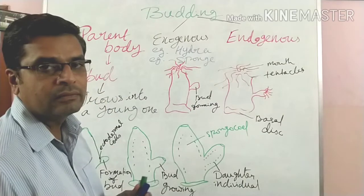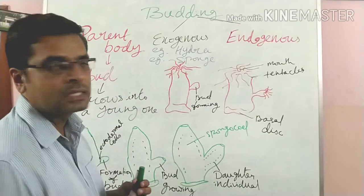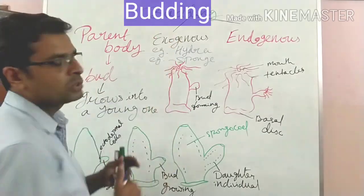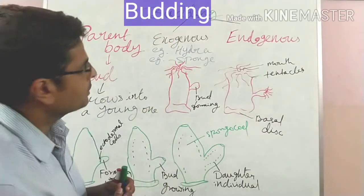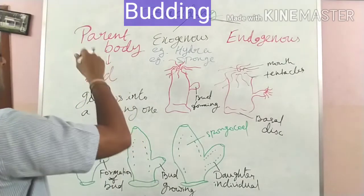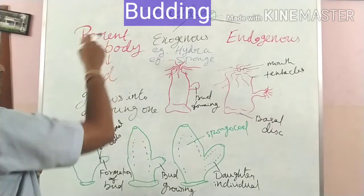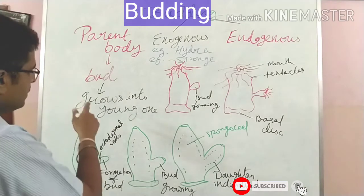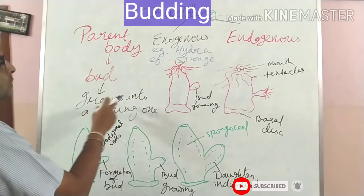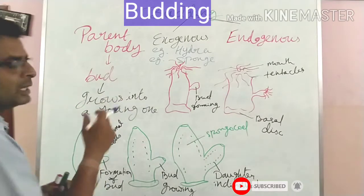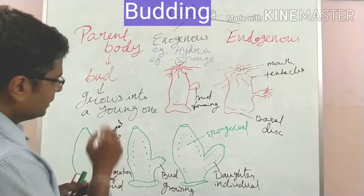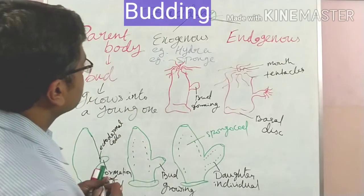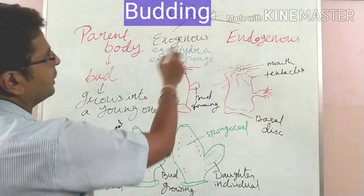In this video we will be discussing budding. It is one of the types of asexual reproduction. Here the parent body produces one or more buds. Each bud grows into a young one and leads to individual life.